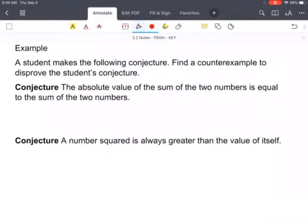The absolute value of the sum of two numbers is equal to the sum of the two numbers. So if I pick two numbers, say negative two and negative two, when I add them together, it equals four. The absolute value of the sum of those two numbers is equal to the sum of those two numbers. The absolute value of negative four is four.